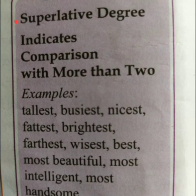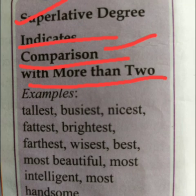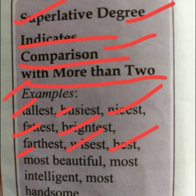Third and last is superlative degree. Superlative degree indicates comparison with more than two. Superlative degree में दो से अधिक लोगों या group के साथ comparison indicate किया जाता है। Examples: tallest, busiest, nicest, fattest, whitest, farthest, wisest, best, most beautiful, most intelligent, and most handsome.